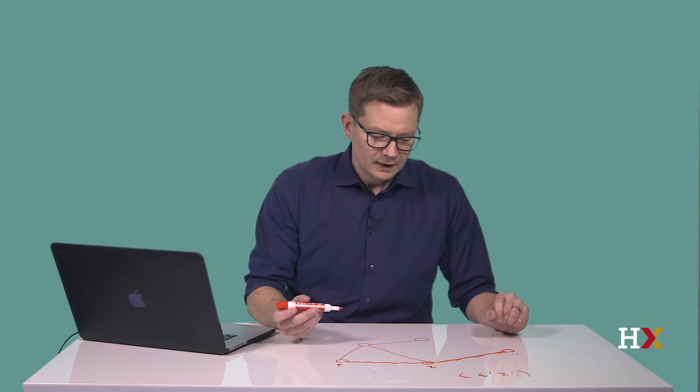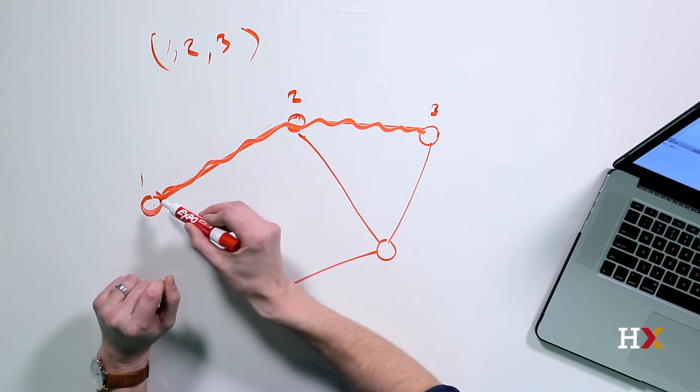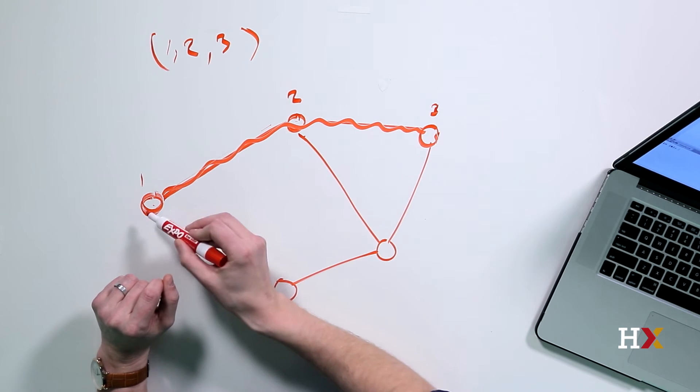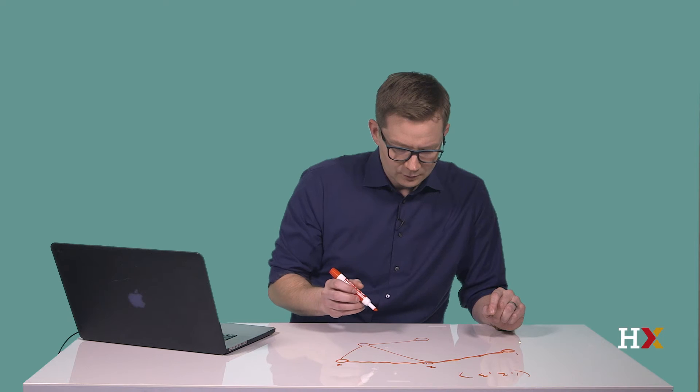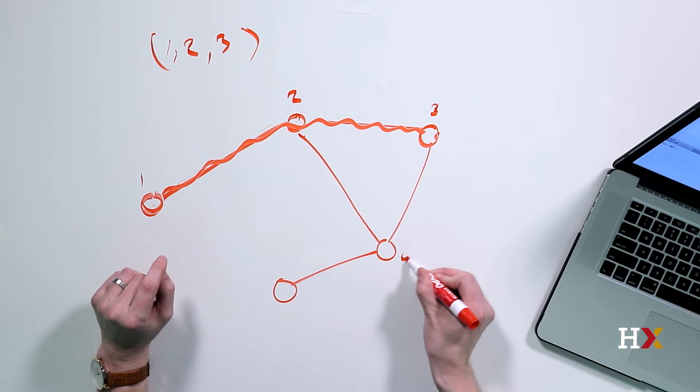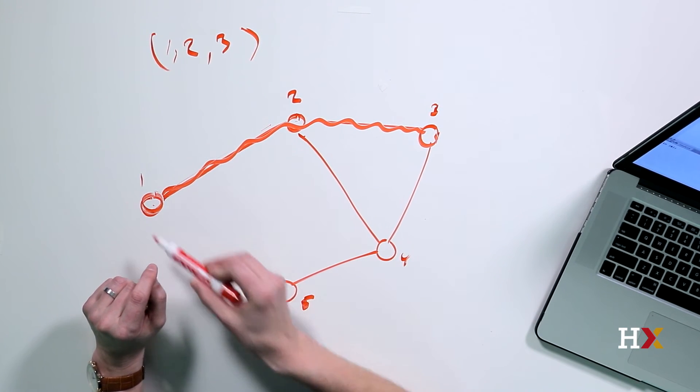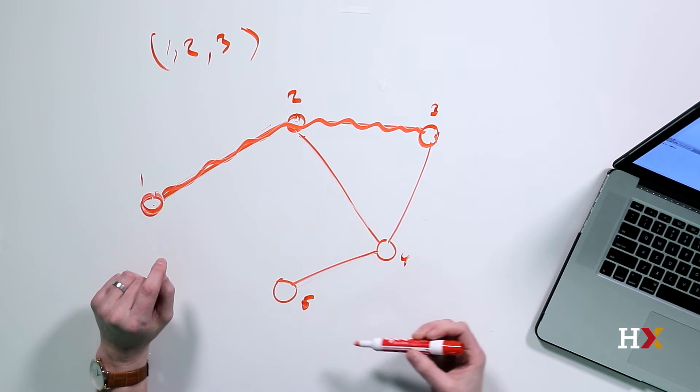The length of a path is defined as the number of edges in that path. In this example, one plus one, that gives us two. So the length of the path from node one to node three, or vertex one to vertex three, is equal to two. Let's look at another path. Let's call this vertex four and this five. The length of the path from one to five would be one, two, three, and so on.